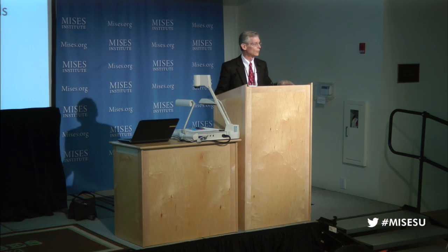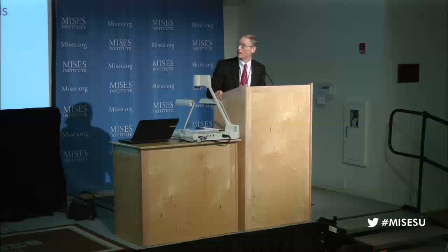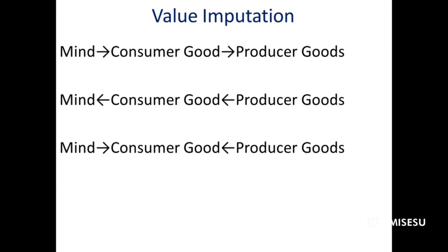Now we want to get to the depiction of value imputation. The top line is the Austrian view of the relationship between value that exists in our minds — the value of consumer goods — and then the value of producer goods that are causally related to the production of the consumer good. So I'm hungry at lunchtime, I want a ham sandwich, and because I value the ham sandwich, I value the ham, the bread, the mayo, and so on. That's the way value is judged and assigned by us as human beings.